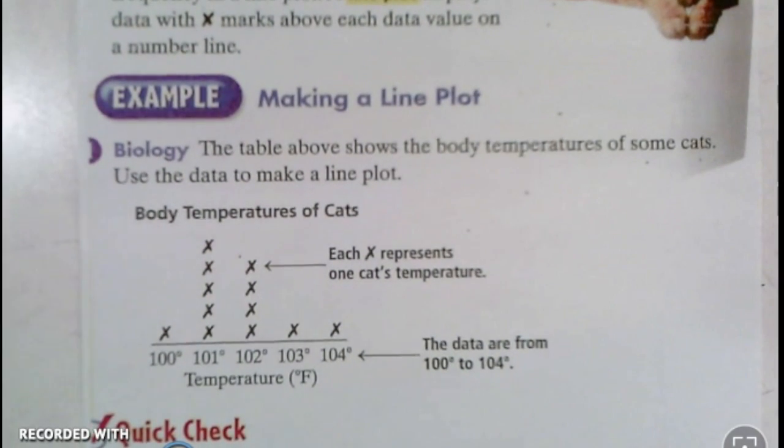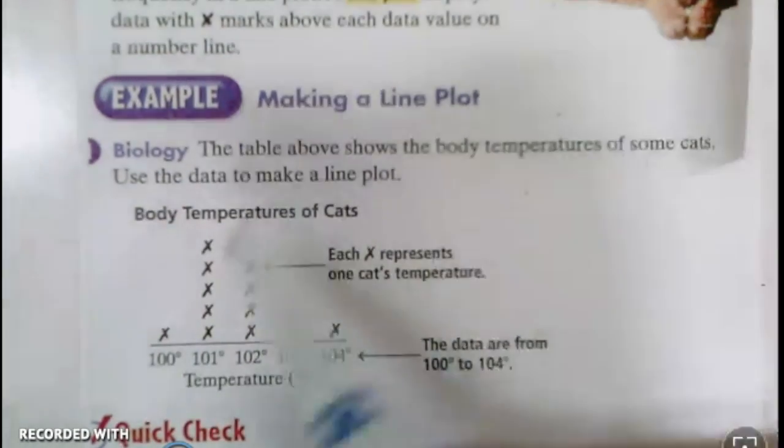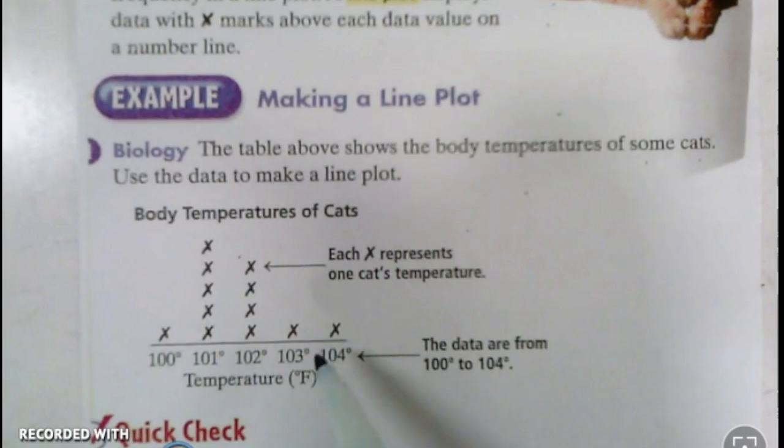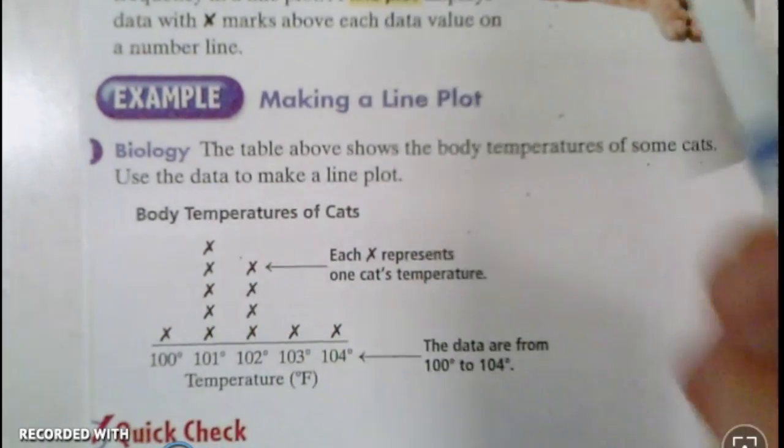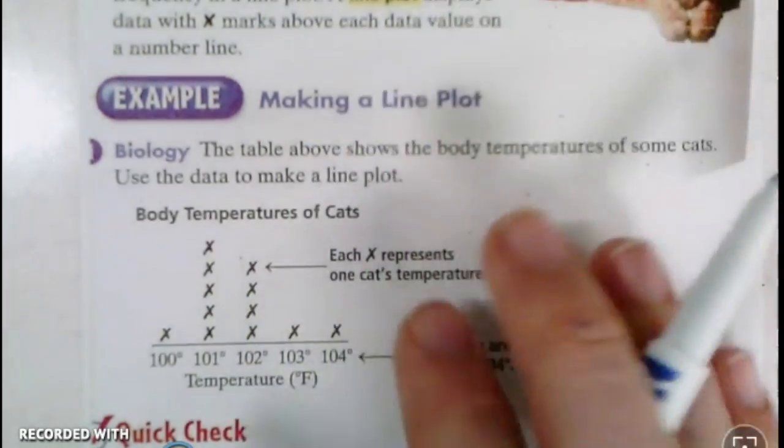This says the table above shows body temperatures of some cats. Use the data to make a line plot. This is how we make a line plot. The first thing we're going to do is look for all of the different values that happen up here.